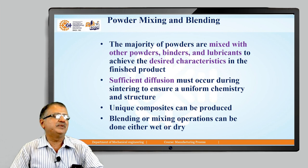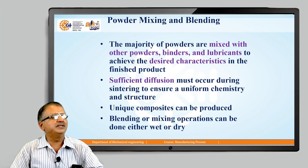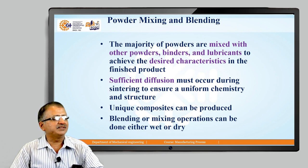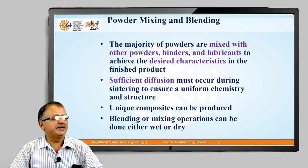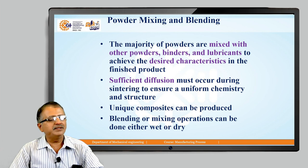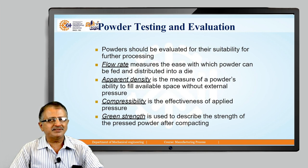After that, powder mixing and blending: the majority of powders are mixed with other powders, binders, and lubricants. This is necessary to achieve green strength, flow, sinterability, and flowability. Sufficient diffusion must occur to ensure a uniform chemistry and structure. We can produce a very unique composite by precisely conforming to the powder characteristics. Blending or mixing operations can be done either in a wet or a dry state, and green strength can be checked for suitability for manufacture.